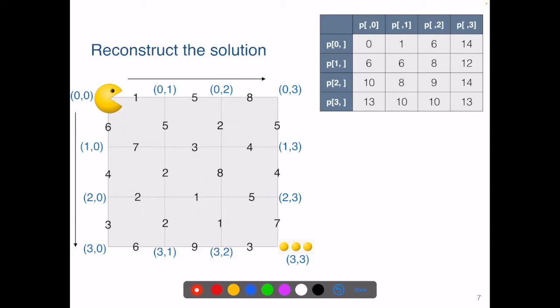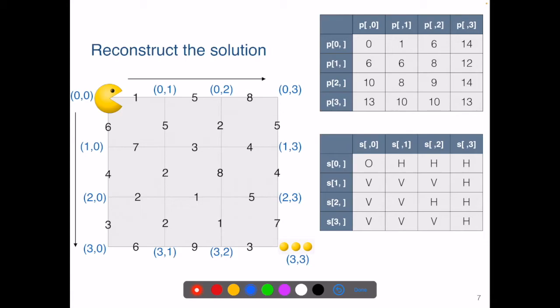Recall when we fill the table for p, we know for each element which option we choose, either by a horizontal move or by a vertical move. We can in fact record that using another table, say S. S(0,0) will be O, the origin.